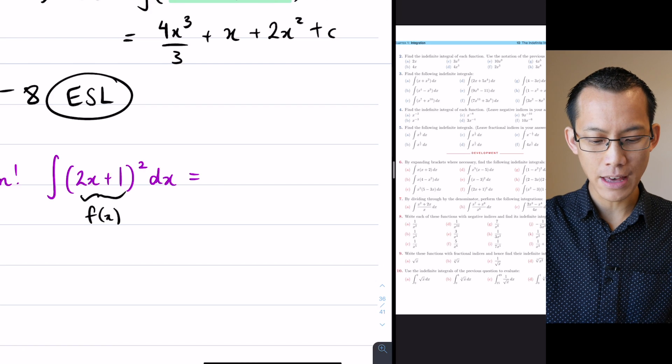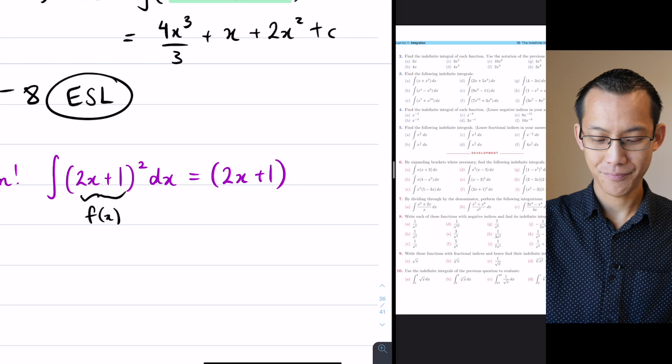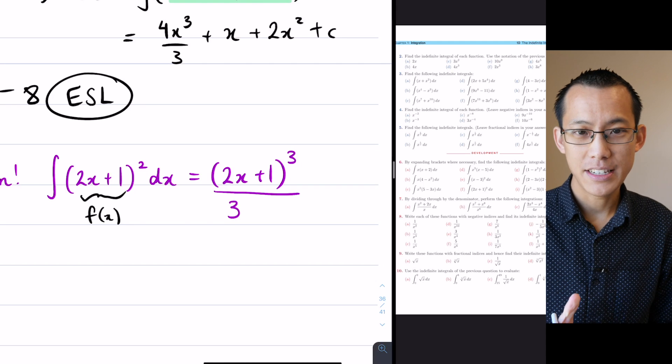For starters I'll have that 2x + 1 that was there before, increase the index up to 3, divide by that new index so I've got the 3 there. At this point, what have I dealt with?